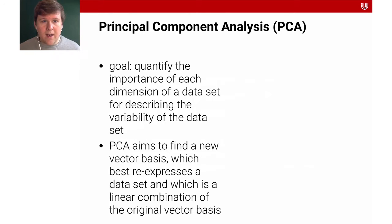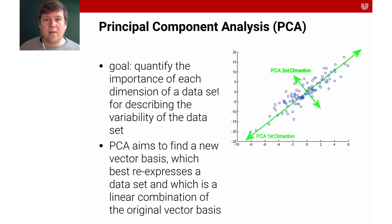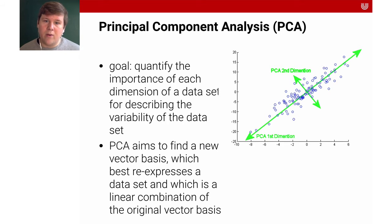Let's consider principal component analysis and revisit what we know about it. The goal of PCA is to quantify the importance of each dimension of a dataset for describing the variability of the data. PCA aims to find a new vector basis which best re-expresses a dataset and which is a linear combination of the original vector basis. As you can see in the figure, the goal is to look at the data — the blue points — and we see that there is a linear increase with some variance. The most important dimension for explaining the variance and differences in the data is indicated as the PCA first dimension.